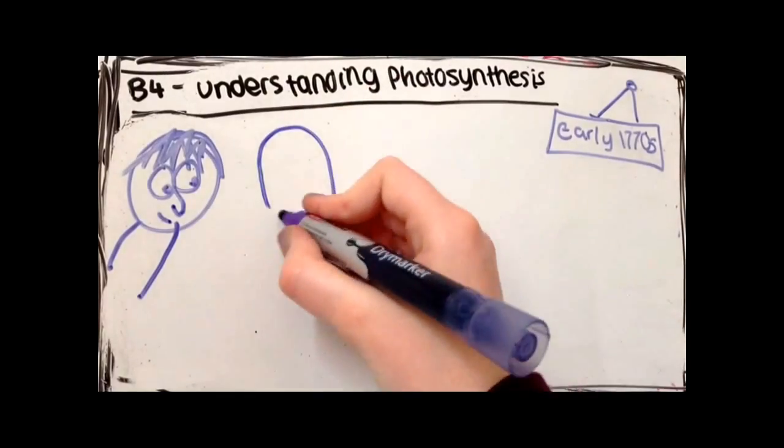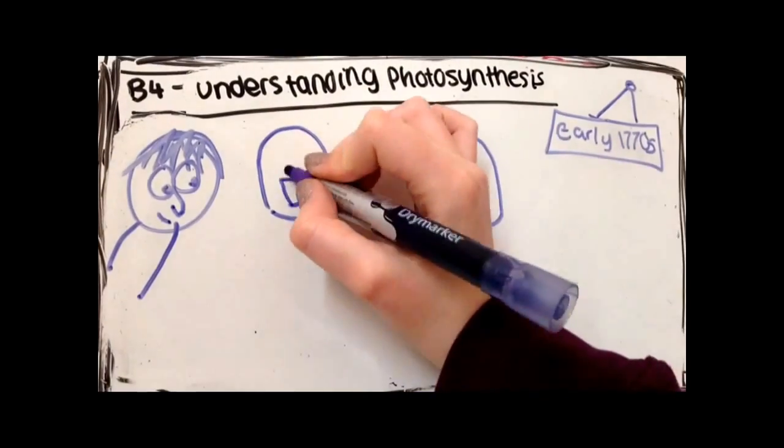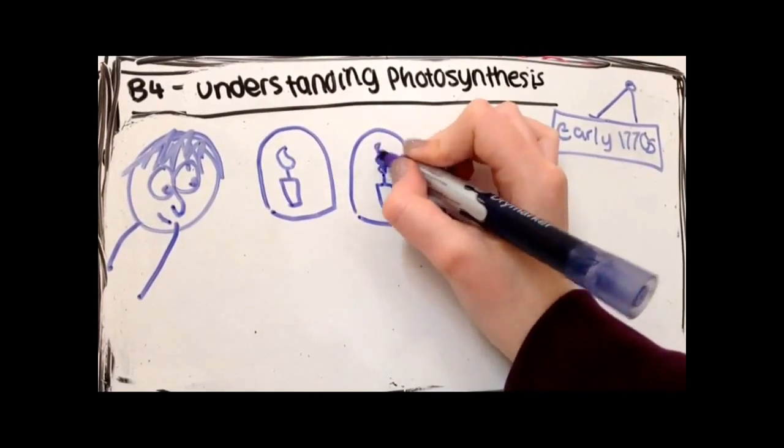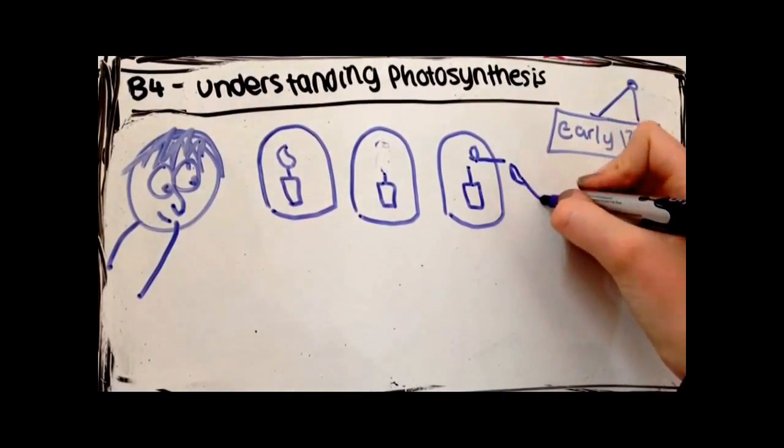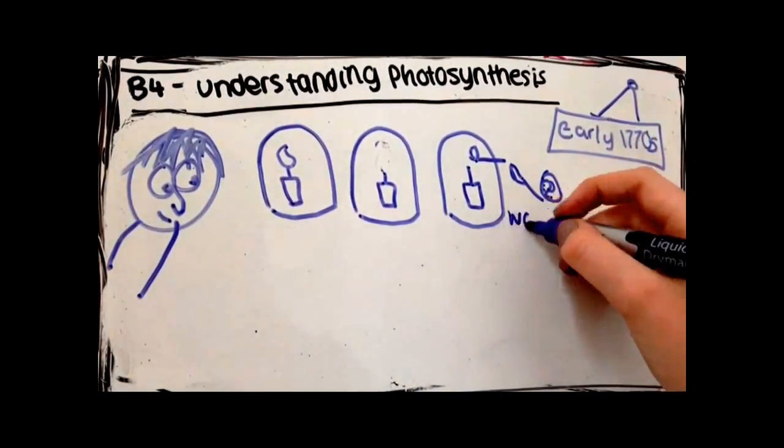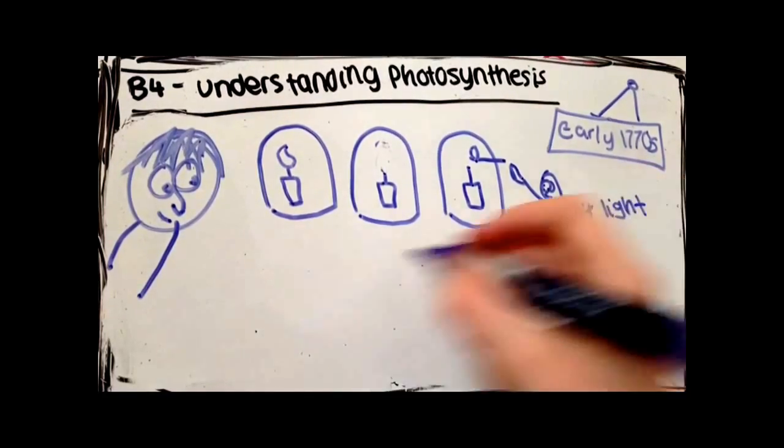In the early 1770s, Joseph Priestley did an experiment too. He placed a burning candle in a sealed container and observed that the flame went out after a short time. However, he couldn't relight it while it was in the container.